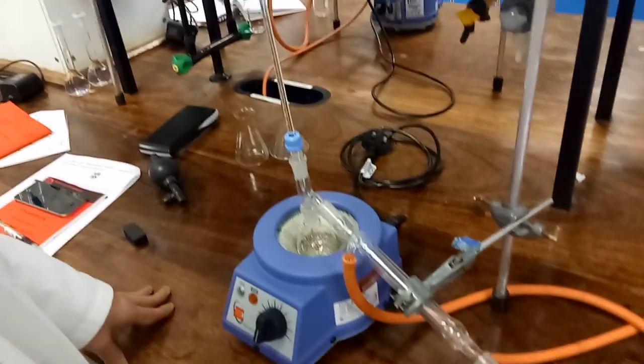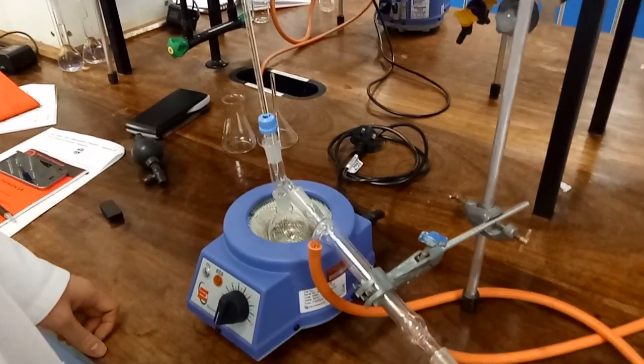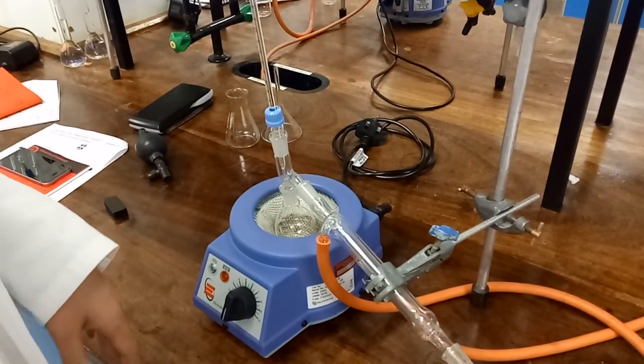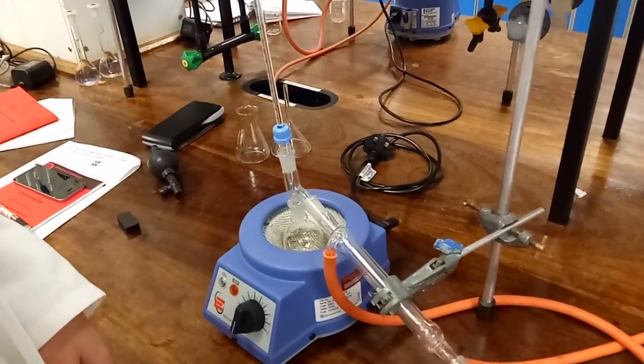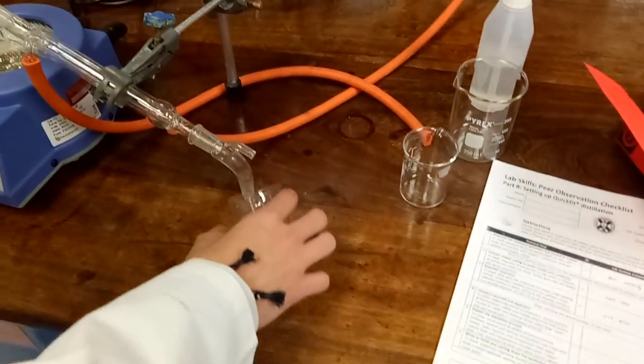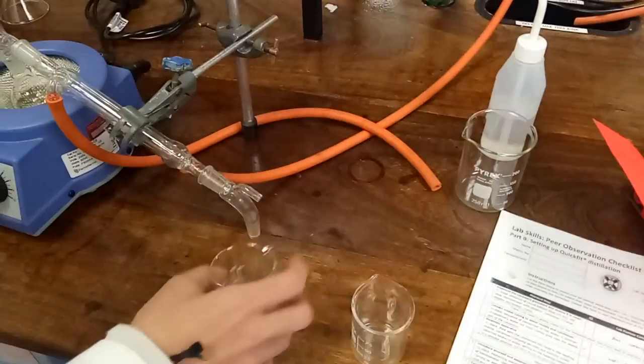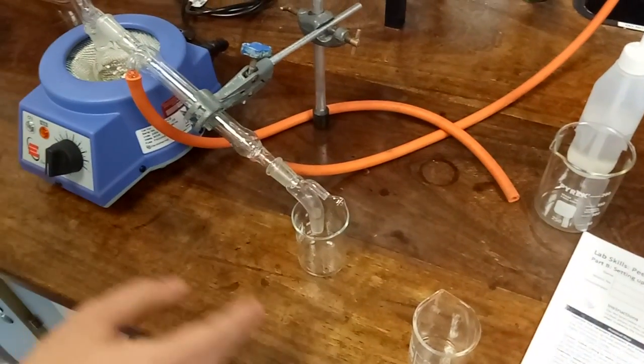When the temperature starts to rise again, that means it's gone past the first boiling point. We take this flask and replace it with a different one to collect the second fraction.